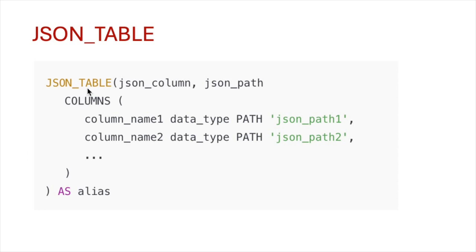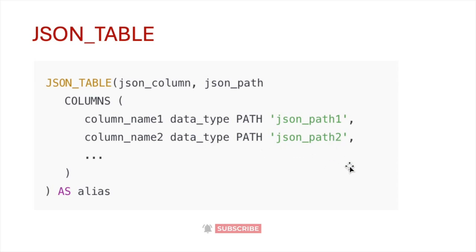The JSON_TABLE function accepts two arguments: JSON column and JSON path. In the JSON column we provide the column containing the JSON document, then we provide the path to extract the data. Next we provide the list of columns to extract, with the column name, data type to cast the extracted value, and the specific path in the JSON object. At the end we specify an alias to reference the output.